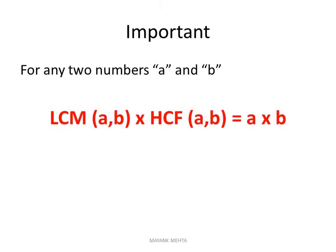Now the important thing to see: for any two numbers A and B, LCM of A and B multiplied by HCF of A and B is equal to A multiplied by B. So if you find the product of LCM and HCF, you will get the same answer as the product of the two numbers.